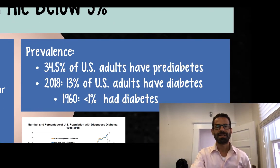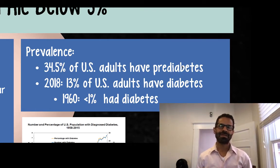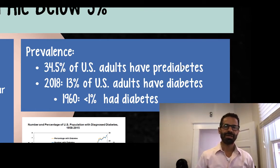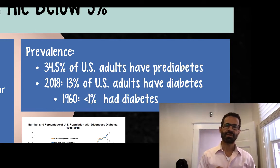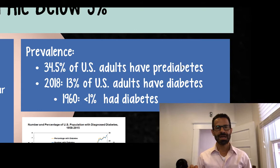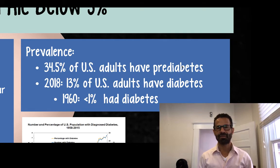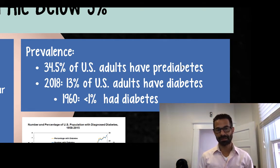Let's look at the prevalence of pre-diabetes and diabetes. Pre-diabetes is a hemoglobin A1c of 5.7 to 6.4. More than one in three U.S. adults — 34.5 percent — have pre-diabetes. Now let's look at the prevalence of diabetes.